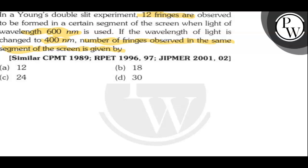If we talk about the key concept of this question, this question is based upon the formula of fringe width, that is β = λD/d. Now there are two different types of wavelengths